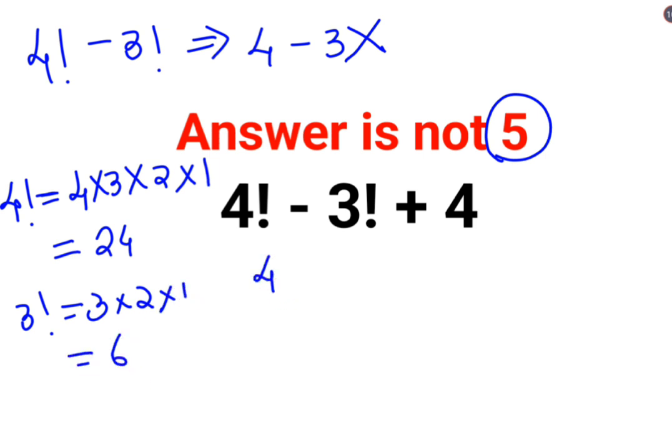So now let's do this. 4 factorial is 24 minus 6 plus 4. So 24 minus 6 is 18 plus 4. Answer comes out to be 22.